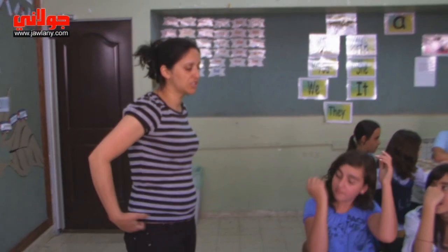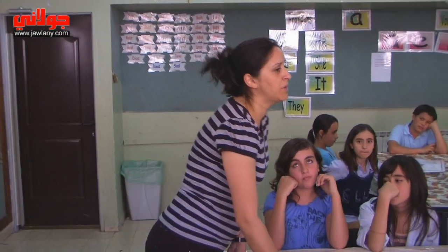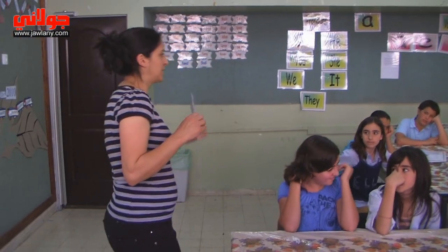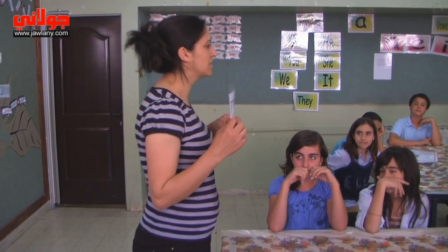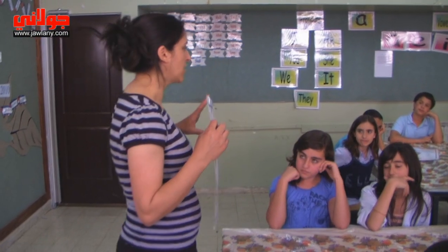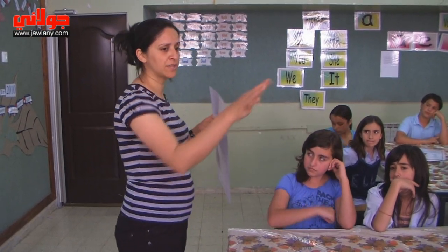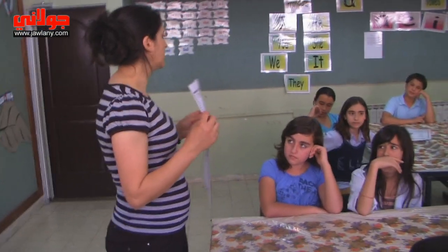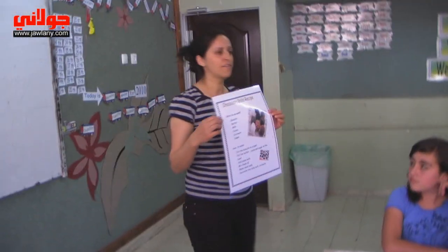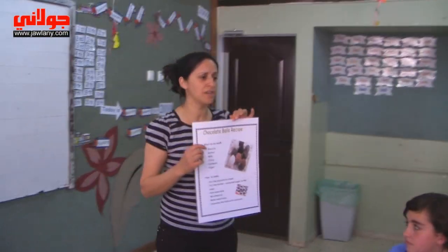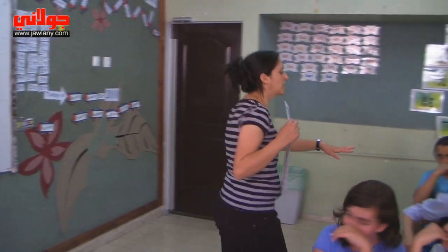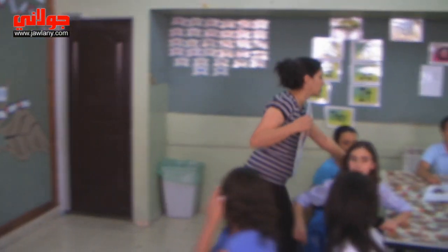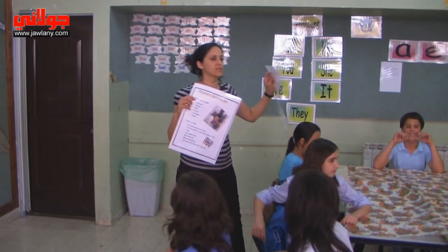Today we are having an English Kitchen and today we are going to make recipes. We are going to make a recipe and prepare it. We have different recipes — each group is going to get a recipe. For example, here we have a chocolate balls recipe. This group is going to make chocolate balls, and this group is also going to make chocolate balls.